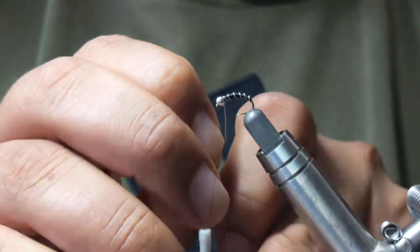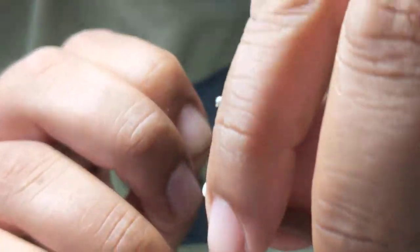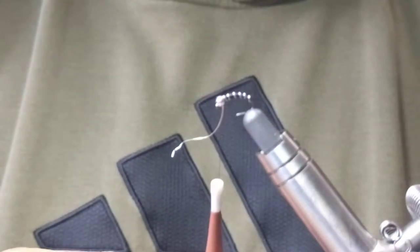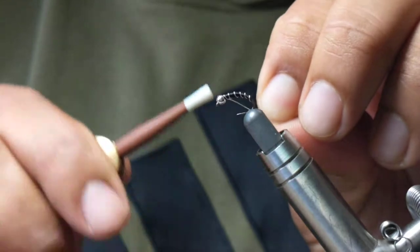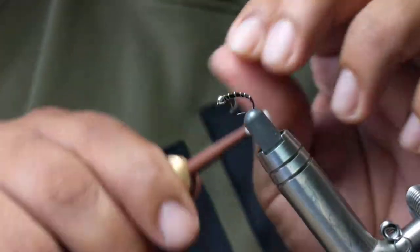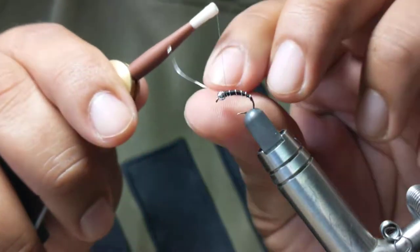Now what I'm doing is wrapping around the wire, keeping my thread tension to not loosen the wire. Those are some wraps in front and back, really just securing that wire so it's not going anywhere.